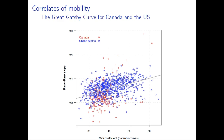Here is the Great Gatsby Curve using the rank-rank slope coefficient. It is attenuated relative to the elasticity so the slope is not as steep, but the positive relationship is still there: higher inequality is associated with less mobility. This is a univariate result and raises the question of what else is associated with less mobility.